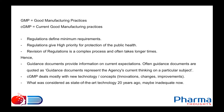Today I would like to present one example through which we will try to understand the difference between GMP and CGMP. As discussed in our previous presentations, regulations are legal requirements — regulations are law. Regulations give high priority for protection of public health and define the minimum requirements to protect public health. So in the industry we always follow much more stringent requirements than what the regulations prescribe.